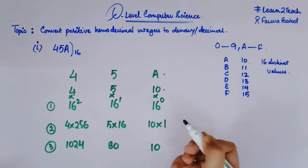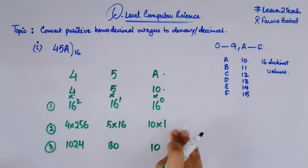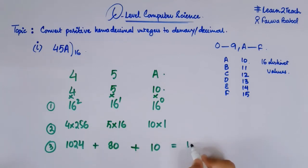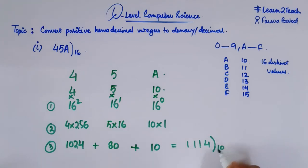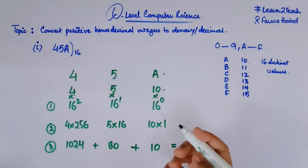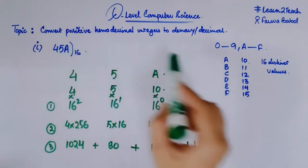After getting the answers of these multiplications, my last step is to add these values. After adding them, I am going to get a denary number that is equal to 1114. So this is the required denary or decimal number 1114, which is equivalent to 45A in the hexadecimal number system. This is how we have converted a hexadecimal integer into a denary one.